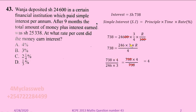We have 738 multiplied by 4, and 246 times 3 becomes the denominator. We have done cross multiplication with the intention of working out Rate R. This expression gives us the result. You divide 738 by 738 to be left with 4 as your rate. So the answer to the question is that the rate was 4 percent per annum.